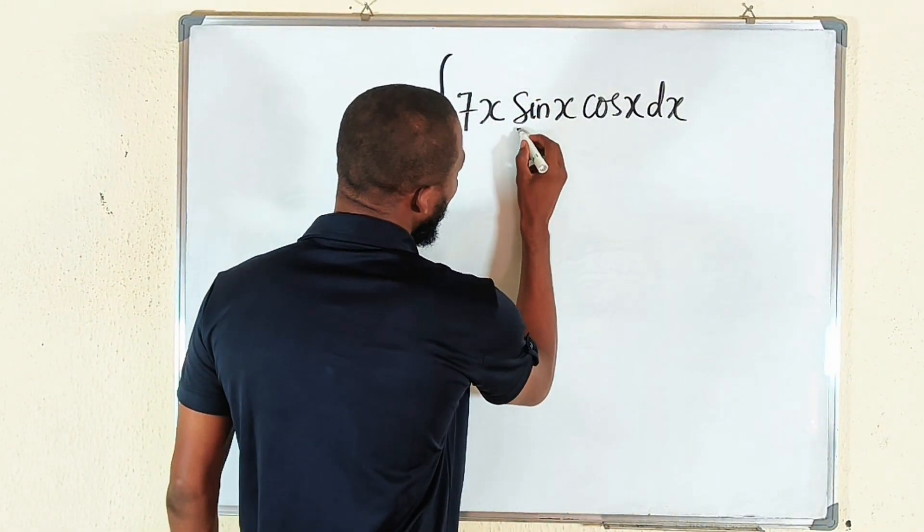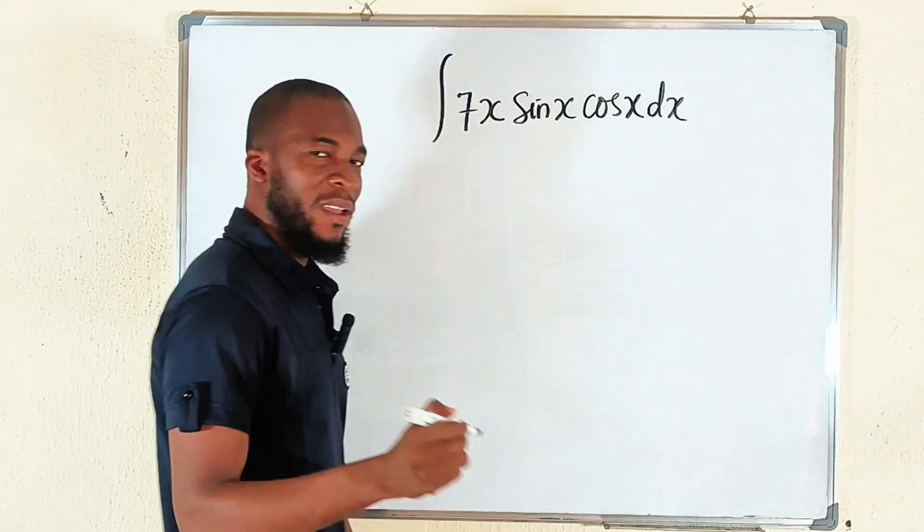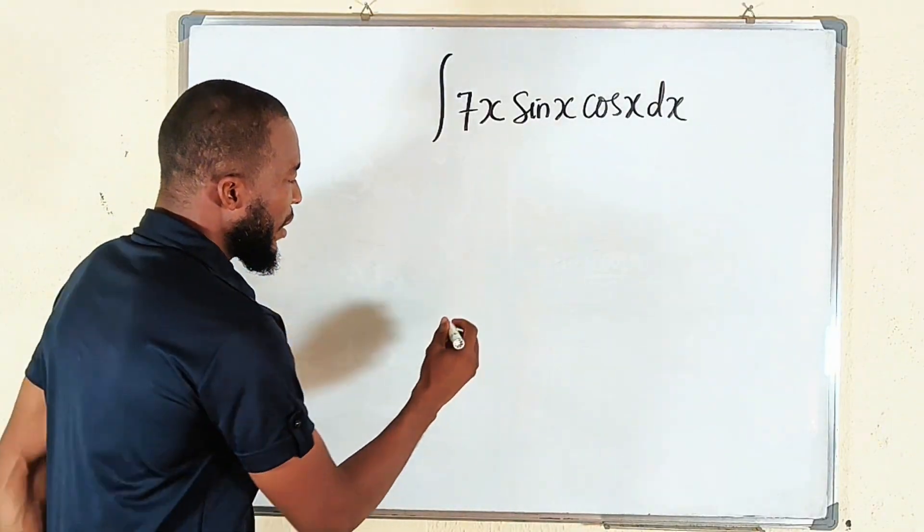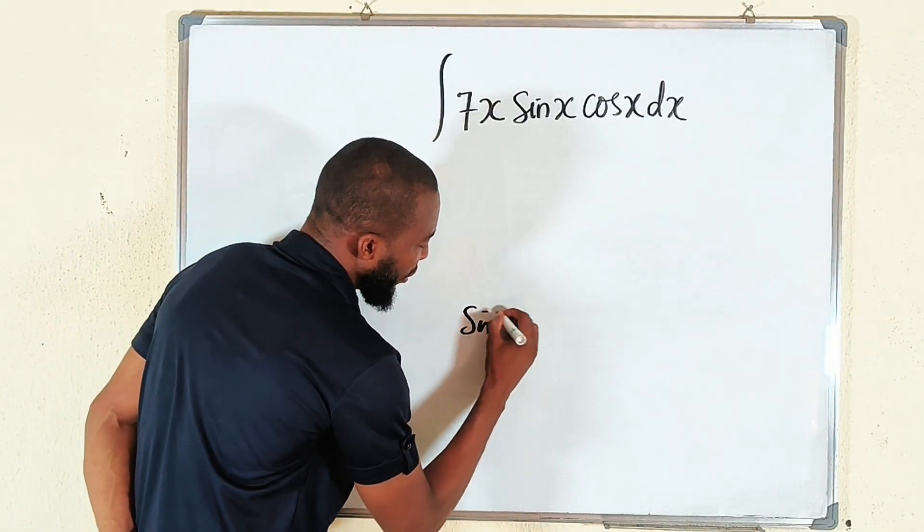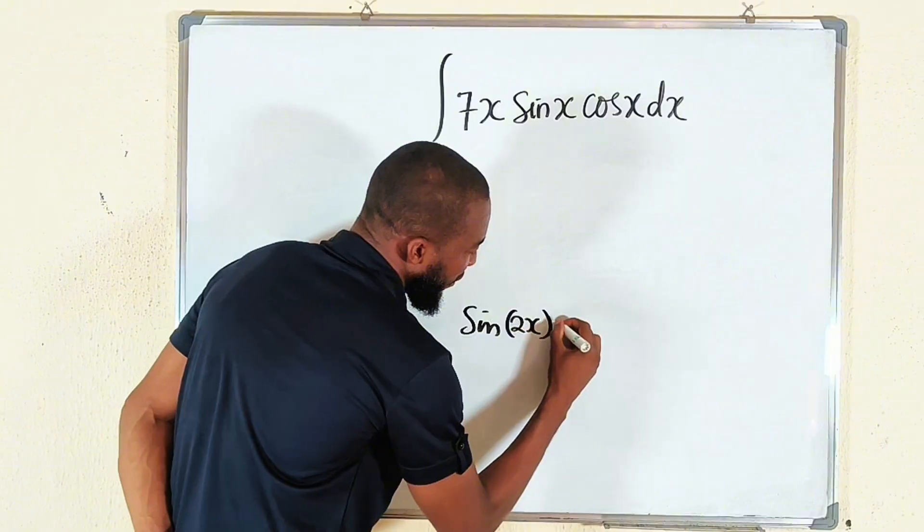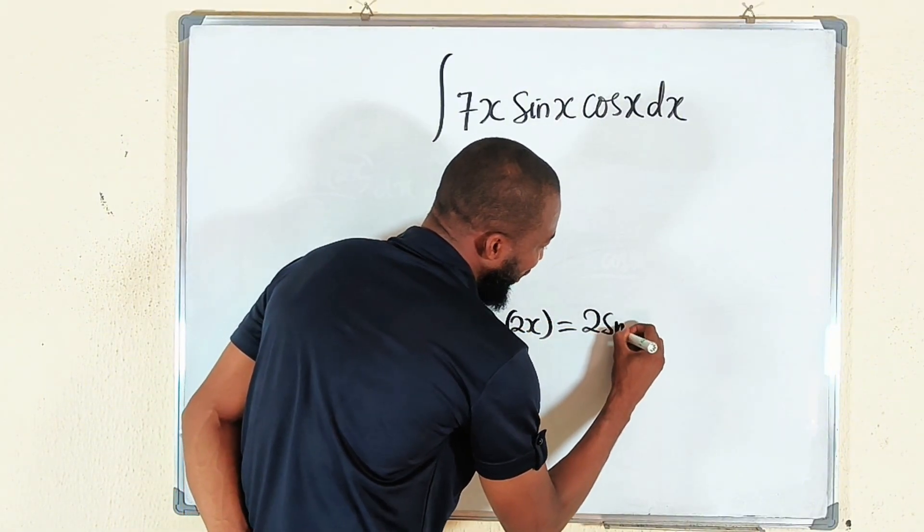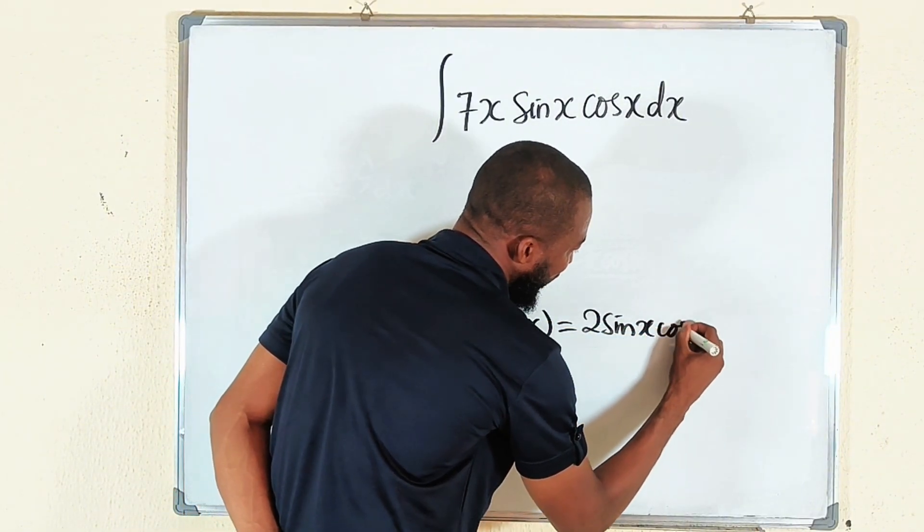Before we start, I would like to simplify sin x cos x. Remember your double angle. If you have sin of 2x, this is the same thing as 2 multiplied by sin x cos x.